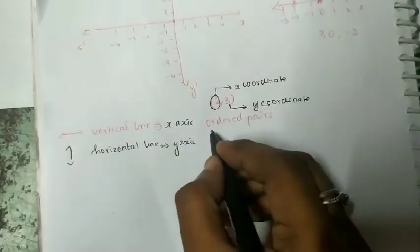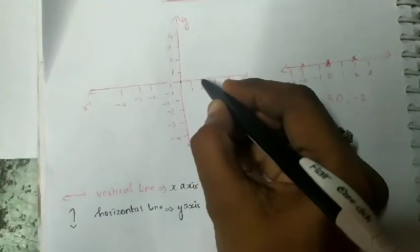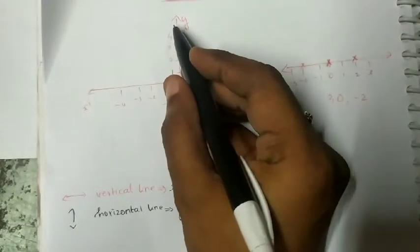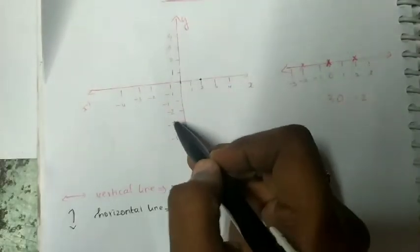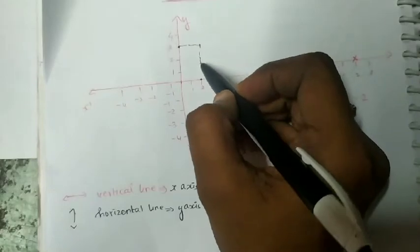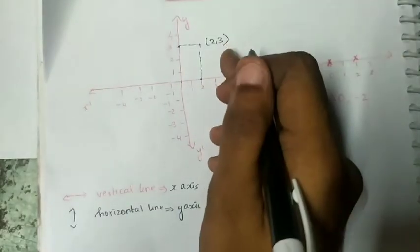We are going to plot this ordered pair (2, 3) in this graph. First, find 2 on the x-axis — the number 2 is here. After that, find 3 on the y-axis — here there is 3. So you can mark this and draw extended lines. This point is marked as (2, 3). You can give some more examples also.